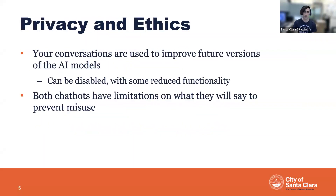The last thing to cover in this overview before we dive into the specific tools is privacy and ethics. Both of these models are trained on massive amounts of data, and some of that data is actually the conversations you have with these tools. So when you ask questions and it gives you answers, that exchange is used to train future versions of the models. For that reason, it's important that you don't share any personal or identifying information in these chats. You can disable this feature, and I'll show you how to do that with both ChatGPT and BARD.